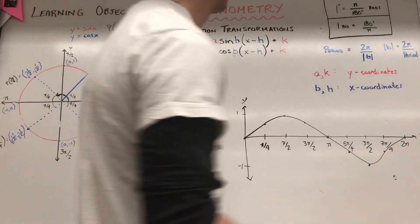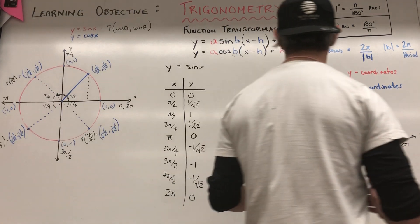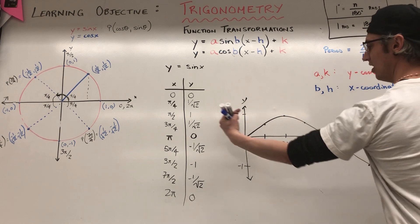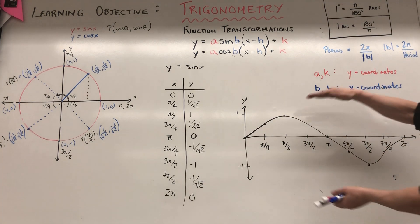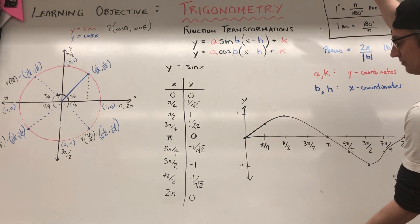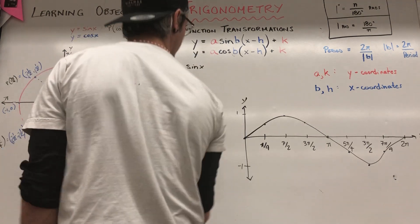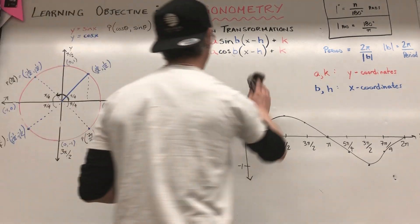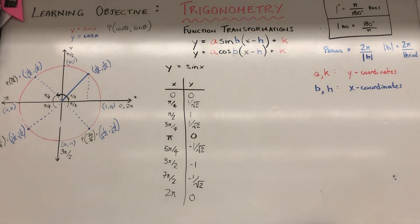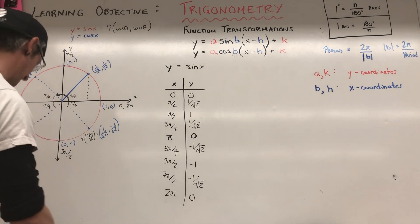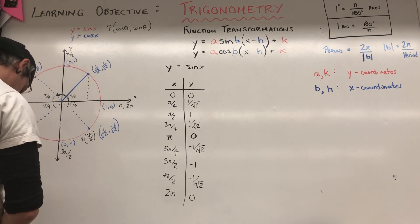Now, B and H — B's going to compress or elongate this, stretch it out, and H is going to shift it left or right. A and K — A's going to amplify it, make it bigger from top to bottom, and K's just going to shift it up and down. They have the exact same role as in every other transformation unit we've done. So what I'd like to do now is take a problem and create a new table of values based on the transformation of y equals sine of x.